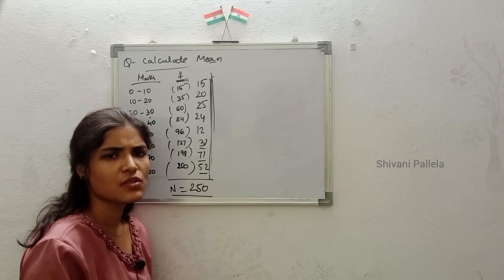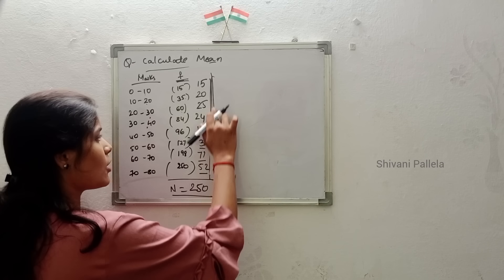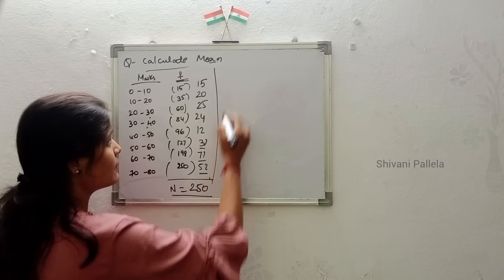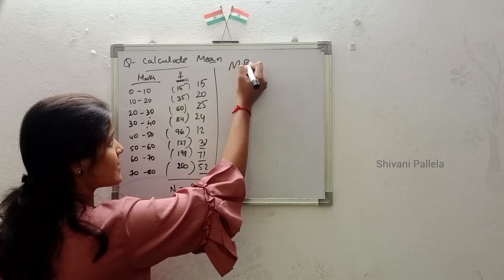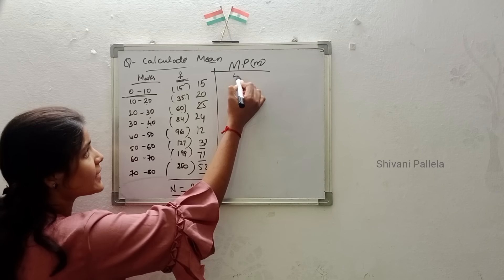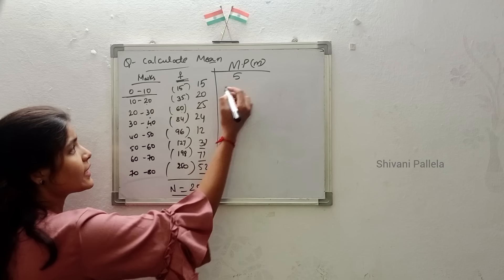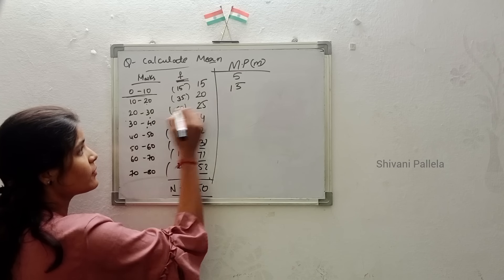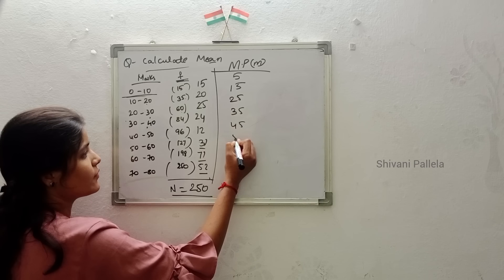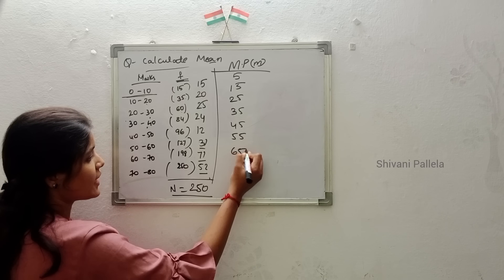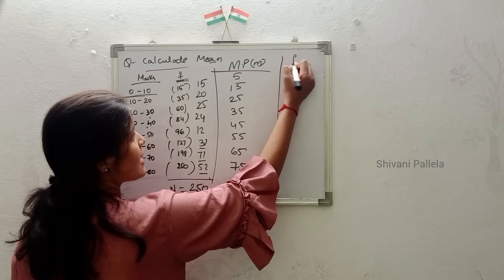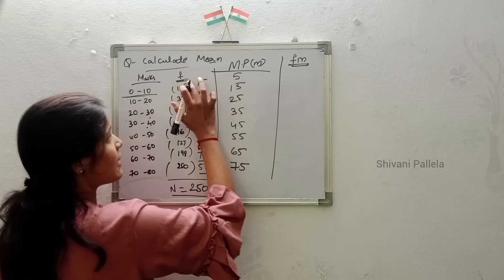Next, we add just one or two more columns. This is the f column. Next, midpoints — we call it m. The midpoint of 0 to 10 is 5, 10 to 20 is 15, 20 to 30 is 25, then 35, 45, 55, 65, and 75. After that the last column is F×M — frequency multiplied by midpoint.